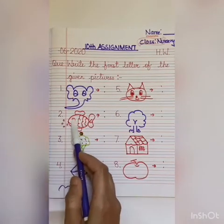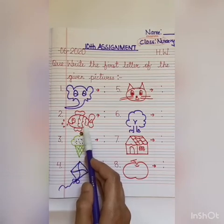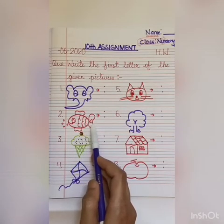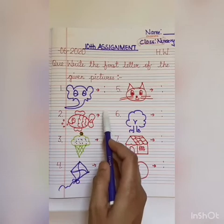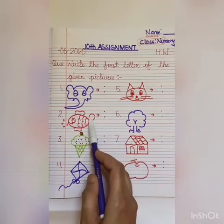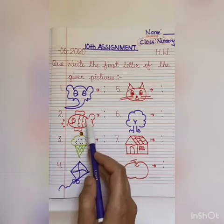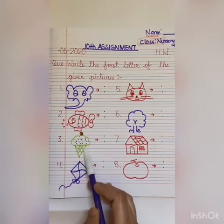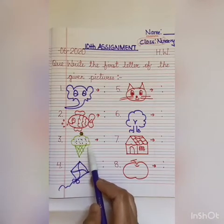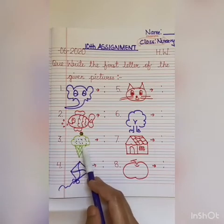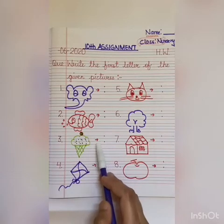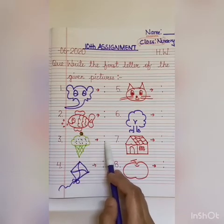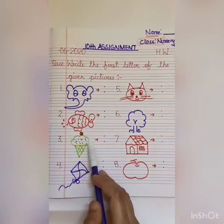Number two — what is this? Yes, this is a fish. And the first letter of fish is F. F, fish. Now number three — which picture is this? Yes, this is an ice cream. So the first letter of an ice cream is I. You will write I. I, ice cream.